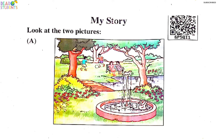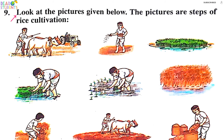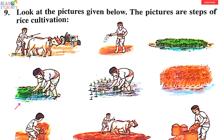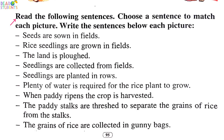Look at the pictures given below. The pictures are steps of rice cultivation. Read the following sentences and choose a sentence to match each picture.